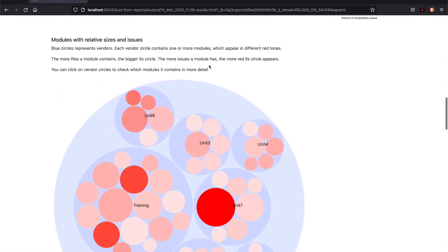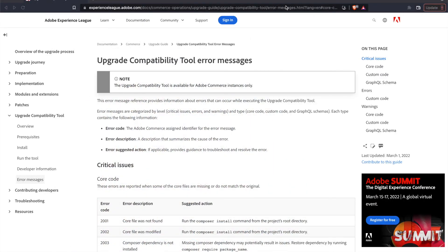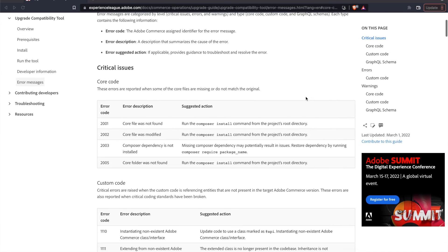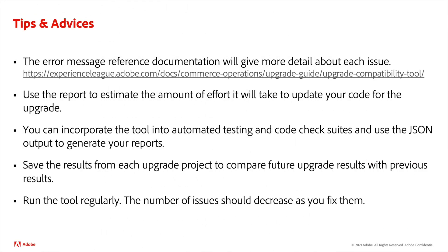All issues identified by the tool are listed on the report with specific error codes. Use the documentation to get more detail about each error message reference. Adobe also gives suggestions to fix each issue type so you can plan out your remediation steps. Use the report to estimate the amount of effort it will take to update your code. Since this is a command line tool, you can incorporate it into automated testing and code check suites. You can also use the JSON output to generate your own reports. Saving the results from each upgrade project is recommended so that you can compare future upgrade results with previous results. It's also recommended that you run the tool regularly while working on the upgrade to have visibility into your progress. The number of issues should decrease as you fix them.